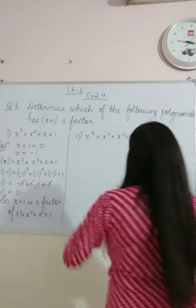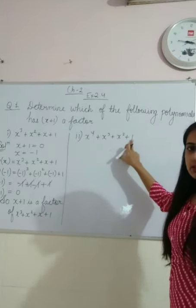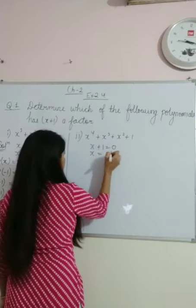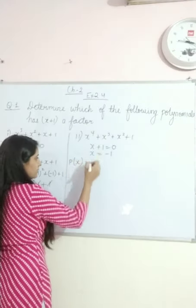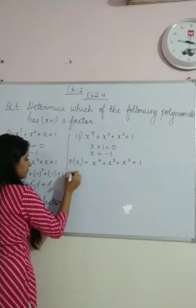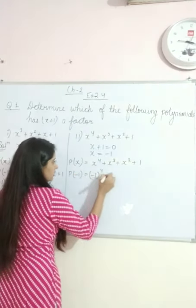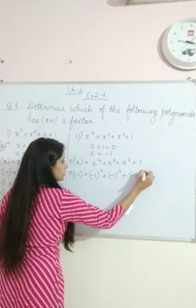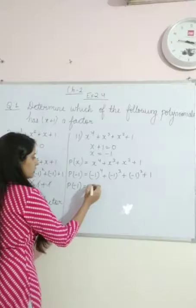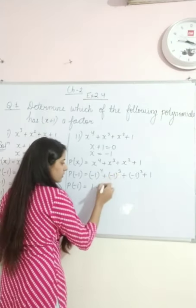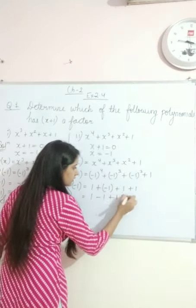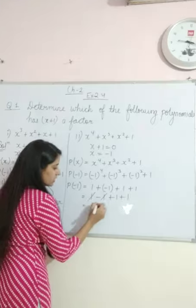यह होगा हमारा first part. Now coming to the next part: x⁴+x³+x²+1. अब x+1 ही check करना है, x+1=0, x=-1. P(-1) = (-1)⁴ + (-1)³ + (-1)² + 1. minus है लेकिन power even है तो answer plus 1. minus है और power odd है तो minus 1. Plus 1, plus 1. 1 minus 1 cancel जाएगा, बचेगा 1+1 = 2. So remainder 0 नहीं है, that means x+1 is not a factor of x⁴+x³+x²+1.